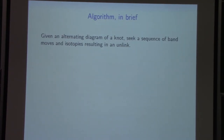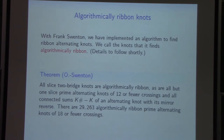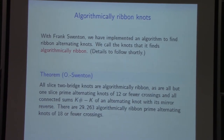Question: do we actually know all the slice alternating knots? We don't know all slice knots in general, but for alternating ones — yes, we essentially do. The only unknown is the Kinoshita-Terasaka knot, I think. Actually, I think we now know them all except possibly that one. The last 12-crossing one was resolved quite recently.